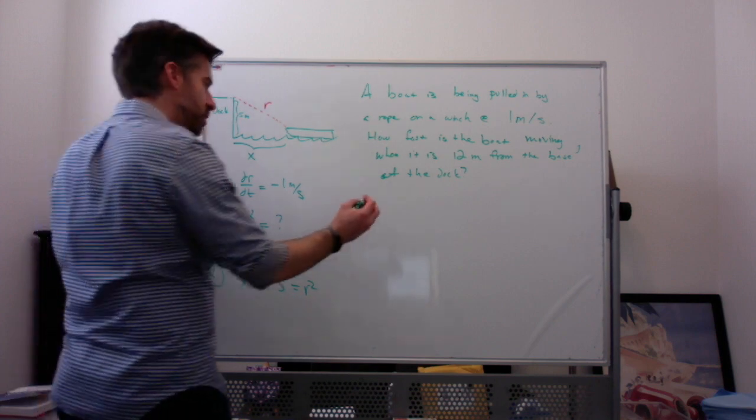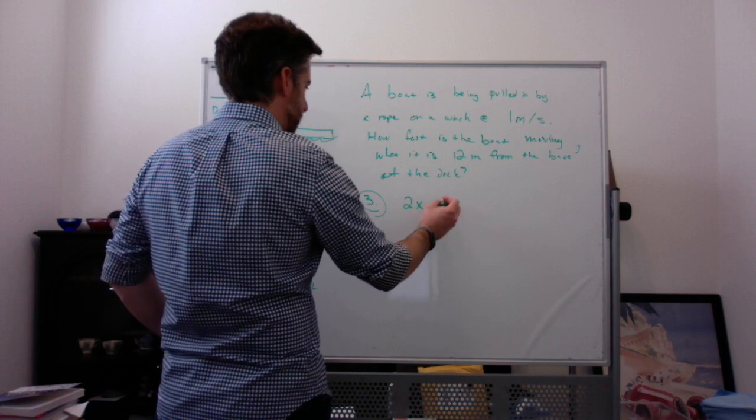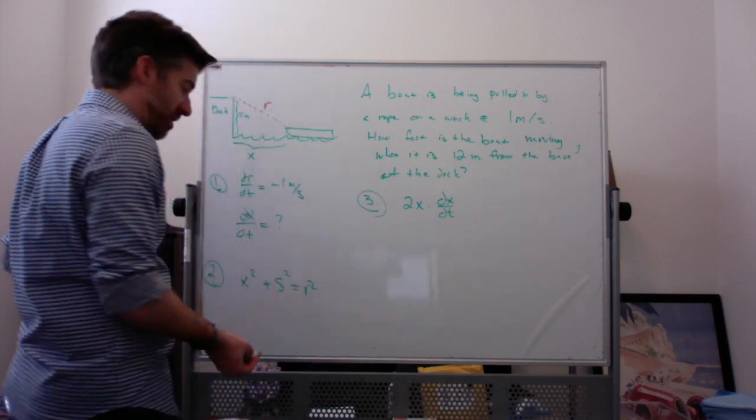And we're going to differentiate everything with respect to T. The derivative of X squared is 2X times the derivative of X, which is dx/dt. The derivative of 5 squared is 0.